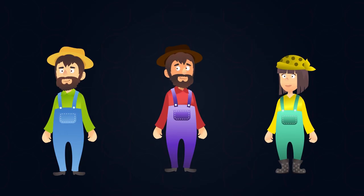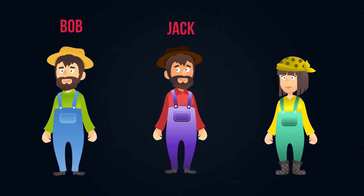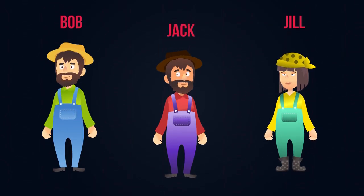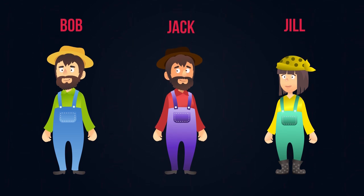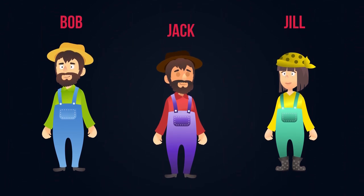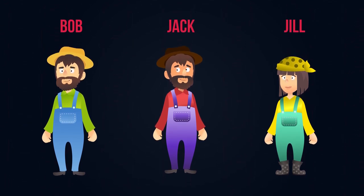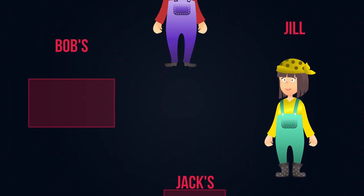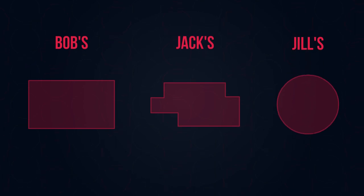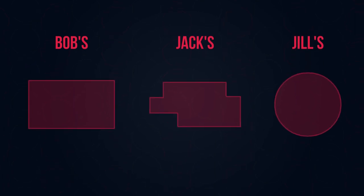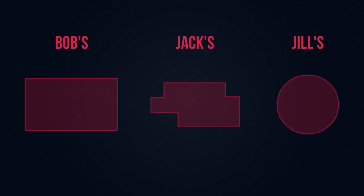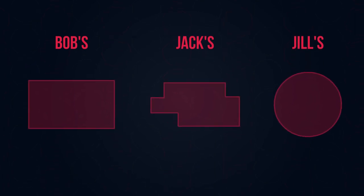Here we have three farmers, Bob, Jack and Jill. They need to fence their fields to stop their sheep from running away. However, they're not too sure how much fencing to buy, especially since their fields have different shapes.